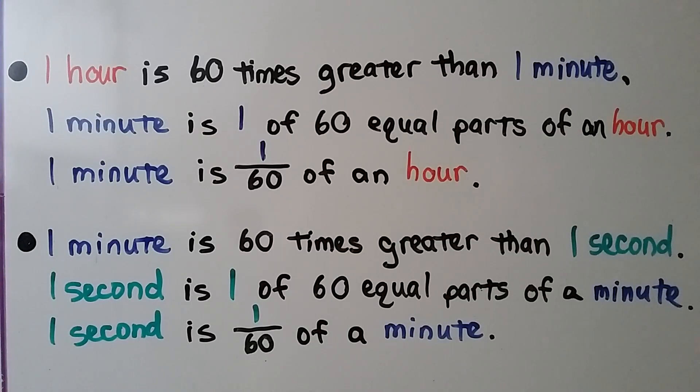One hour is 60 times greater than one minute. One minute is one of 60 equal parts of an hour. One minute is 1/60th of an hour. One minute is 6 times greater than one second. One second is one of 60 equal parts of a minute. So one second is 1/60th of a minute.